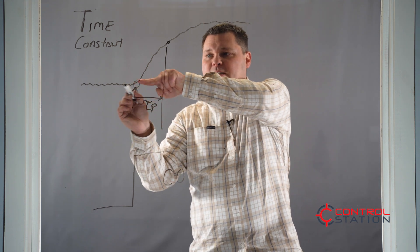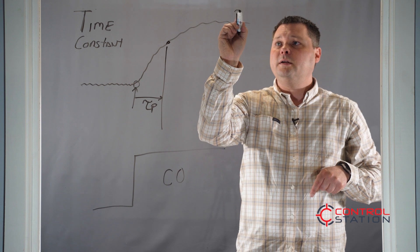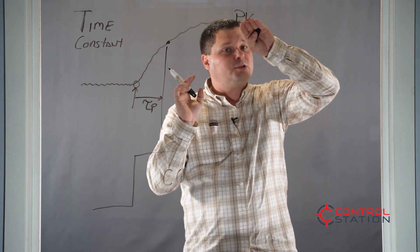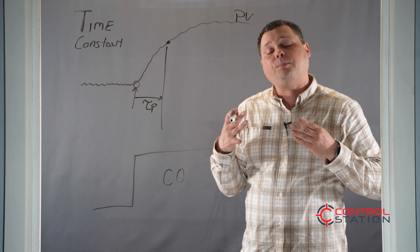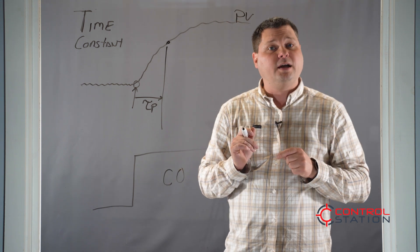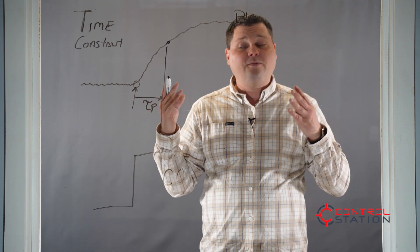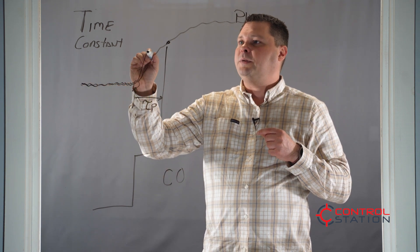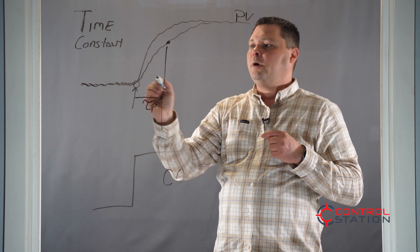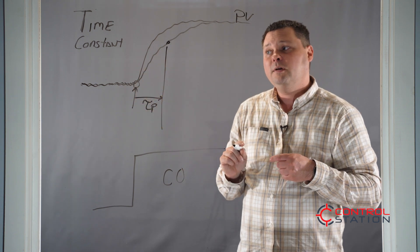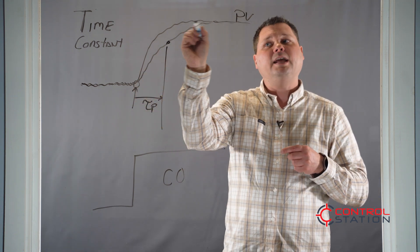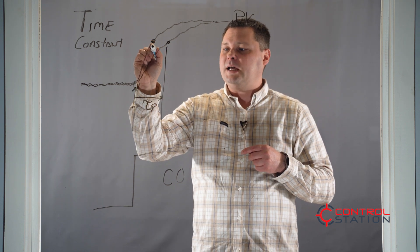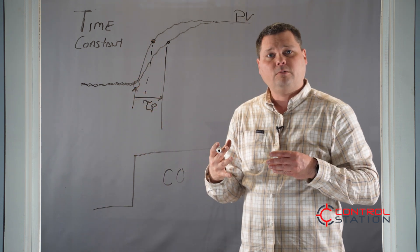So if this is our process variable, how fast does it get there? How fast does it start to respond? If I were to tell you that the process had a small time constant, that would mean it's very fast. A process with a small time constant may look something like this, where it moves very quickly. Fast moving loops are still going to end at the same point, but it's actually going to reach that 63% of the way there faster.